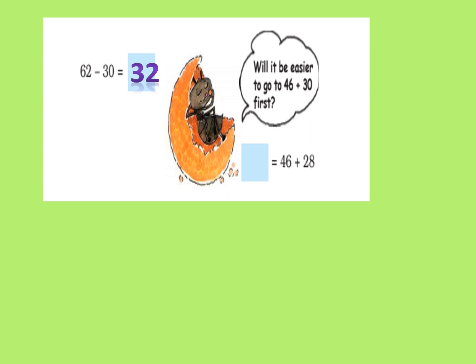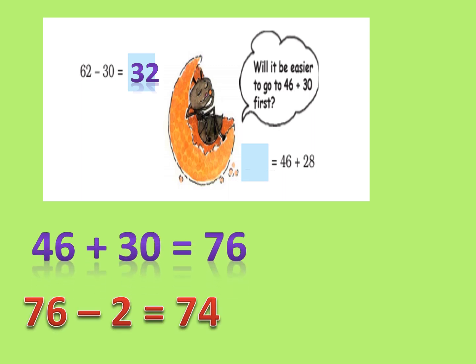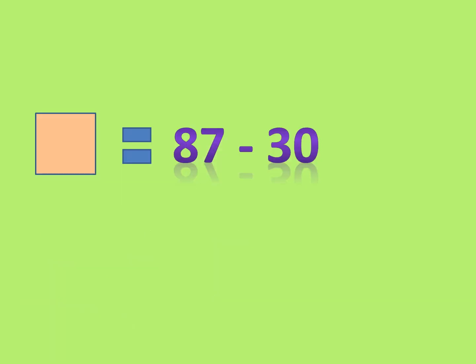For 42 minus 30, imagine we are on 62. We jump three rows down and get 32. For 46 plus 28, imagine the number 46. We have to add 28, so first add 30: jump three rows above to reach 76, then two steps towards the left — we reach 74.